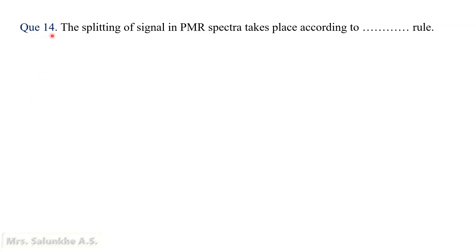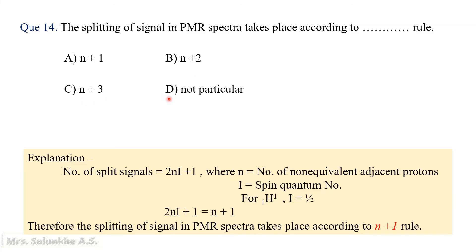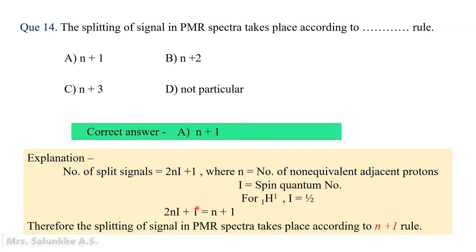Question 14: The splitting of a signal in PMR spectra takes place according to the dash-dash rule. Options: n+1 rule, n+2 rule, n+3 rule, or no particular rule. In NMR spectra, the number of split signals equals 2nI+1, where n is the number of non-equivalent adjacent protons and I is the spin quantum number. For hydrogen, I = 1/2, so 2nI+1 = n+1. Hence, splitting in PMR spectroscopy follows the n+1 rule. The correct answer is A, n+1.